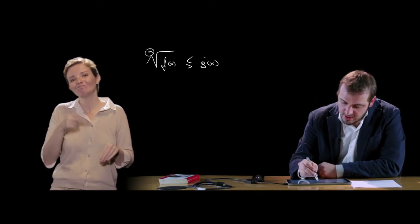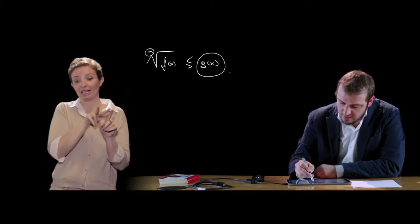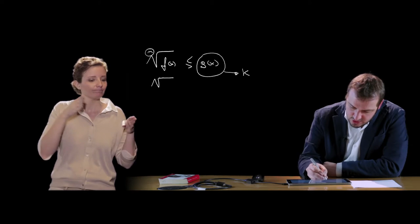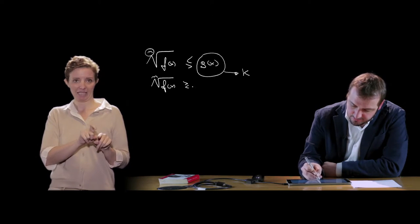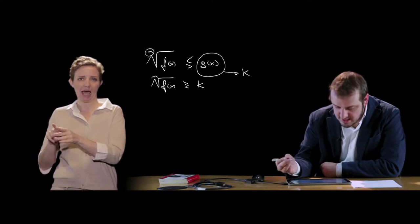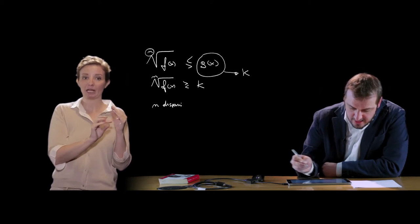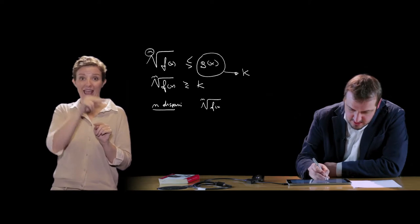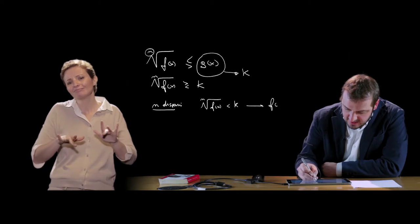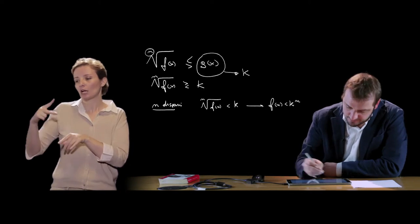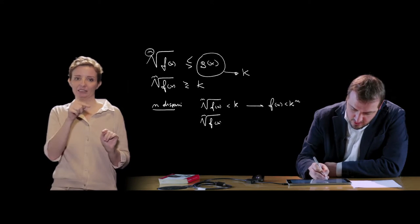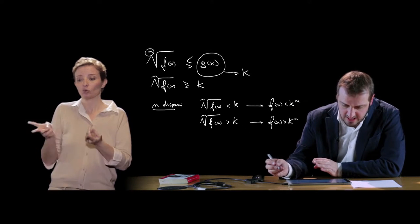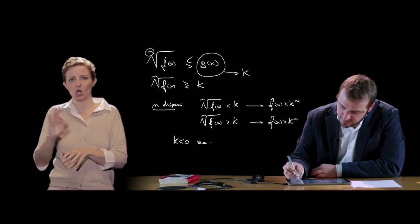Iniziamo andando a vedere il caso in cui g(x) non è una funzione di x ma è una costante k. Studiamo quindi esclusivamente il caso in cui la radice ennesima di f(x) risulta essere maggiore o minore del nostro valore k. Se n è dispari, la disequazione radice ennesima di f(x) minore di k si trasforma elevando alla n primo e secondo membro. Allo stesso modo radice ennesima di f(x) maggiore di k si trasforma in f(x) maggiore di k alla n. Questo vale sia se k è minore di zero, sia se k è maggiore di zero.